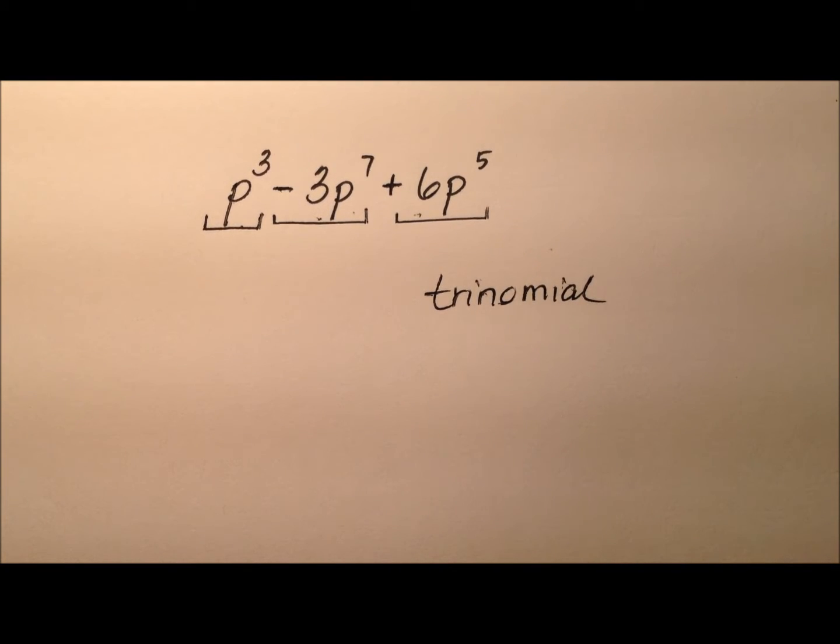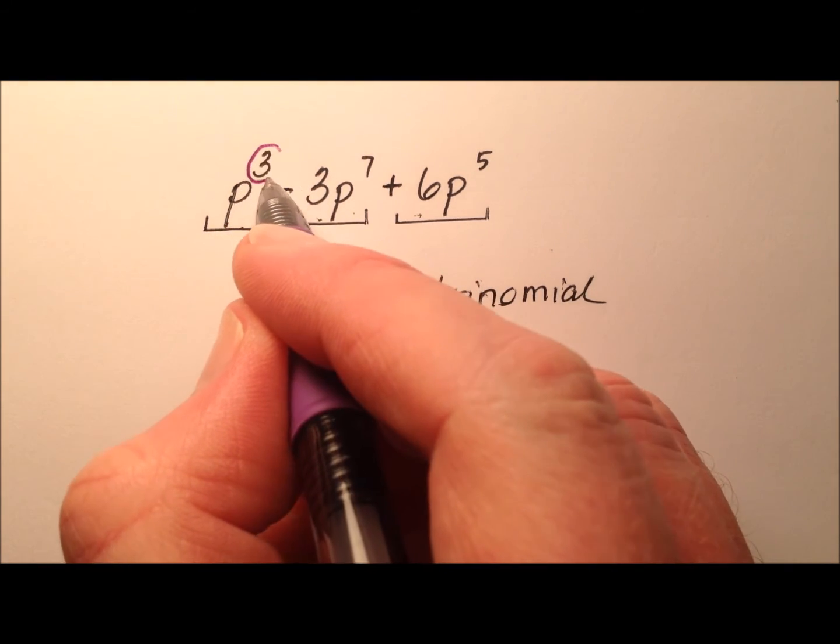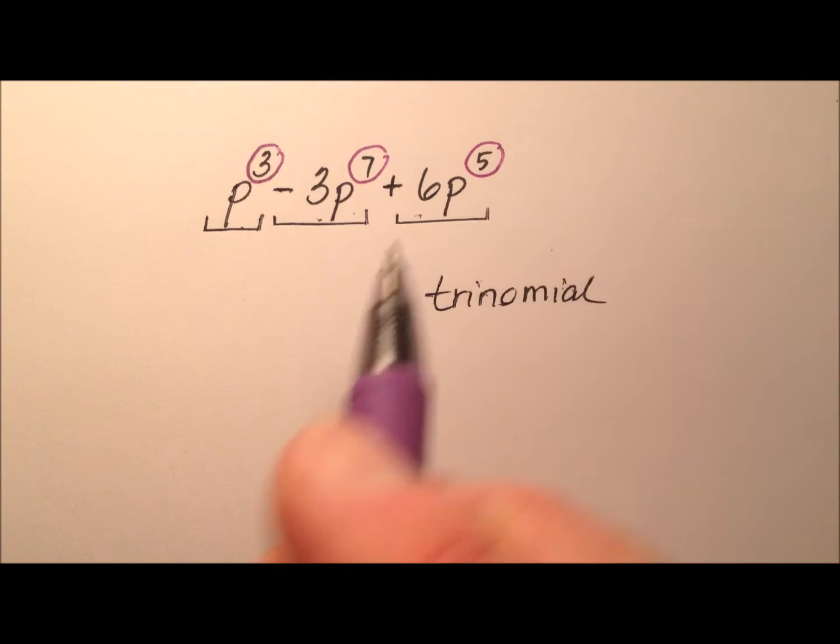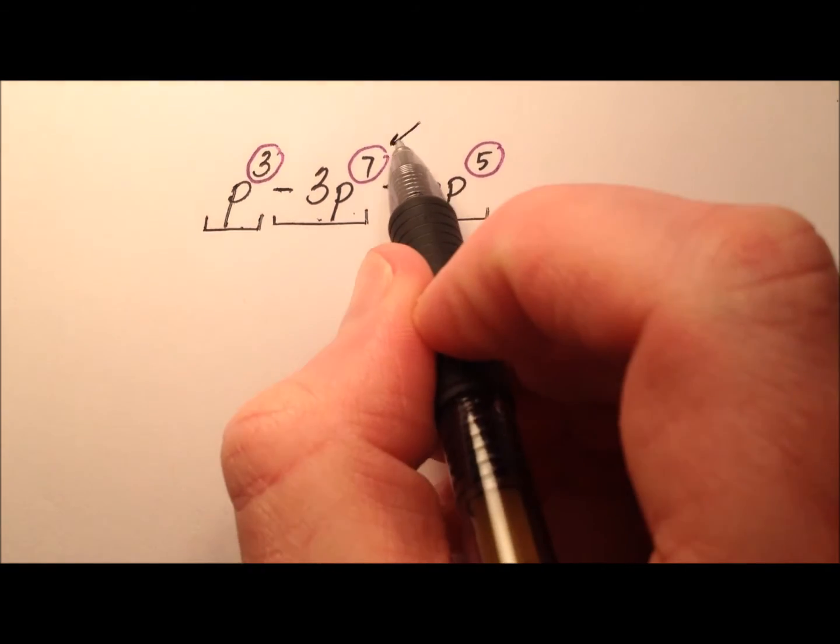So now we need to determine what is its degree. Remember the degree is the highest degree term, and the degree of any one of these terms is just the variable exponent. So we have 3, and we have 7, and we have 5. So which one's the biggest of those three numbers? Well,